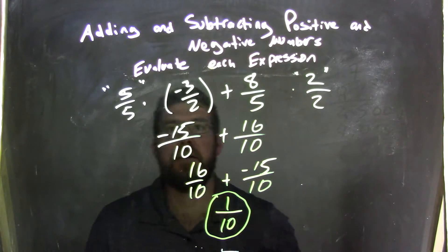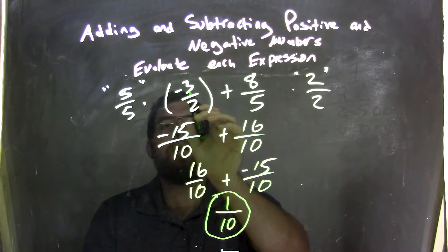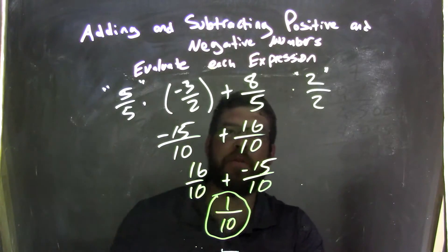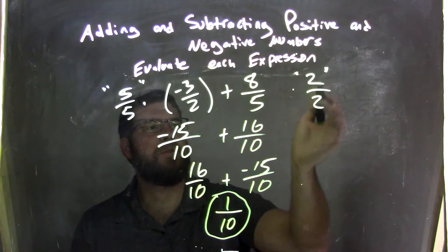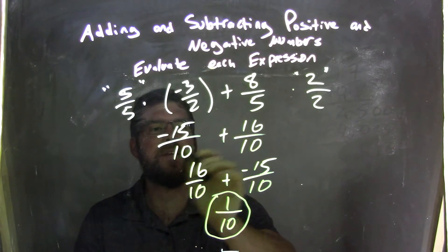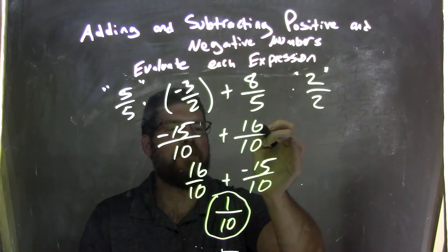So again, let's recap. Negative three-halves plus eight-fifths, we have to find a common denominator, which was ten, so five over five, two over two, multiplied it out, got negative fifteen over ten, and plus a sixteen over ten.